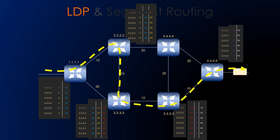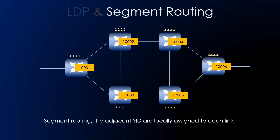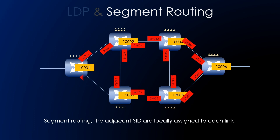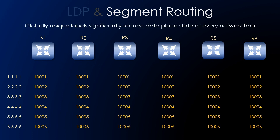LDP's independent LSP control mode can proliferate unnecessary control and data plane state, resulting in scaling challenges. In segment routing, nodes and prefixes are assigned globally unique values throughout the domain. Global unique labels significantly reduce the data plane state at every network hop. There is no need for LDP anymore — labels are advertised in IGP together with IP prefixes. No LDP-to-IGP sync is needed, no LIB scaling issues, and only a single label per device.